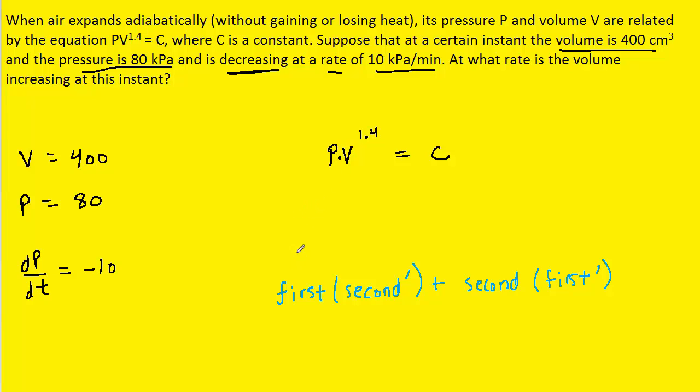So here we go. We're going with the first function, which is just P, multiplied by the derivative of the second function. Now the derivative of the second function, in order to calculate it, we would pull the 1.4 down in front. We would write V. We would subtract 1, which is going to give us 0.4.